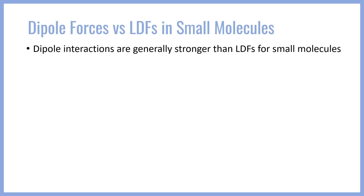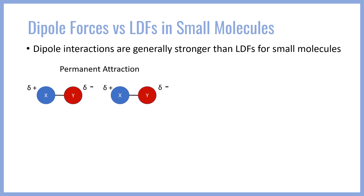Generally, when we look at small molecules, dipole forces or dipole interactions are going to be stronger than London dispersion forces. This is because dipole forces offer a permanent electrostatic attraction between molecules. For example, in these two molecules shown below, the proximity between the partial positive charge on the right (blue) and the partial negative charge on the left (red) will lead to a permanent electrostatic interaction because the partial charges are both fixed and permanent on those molecules.